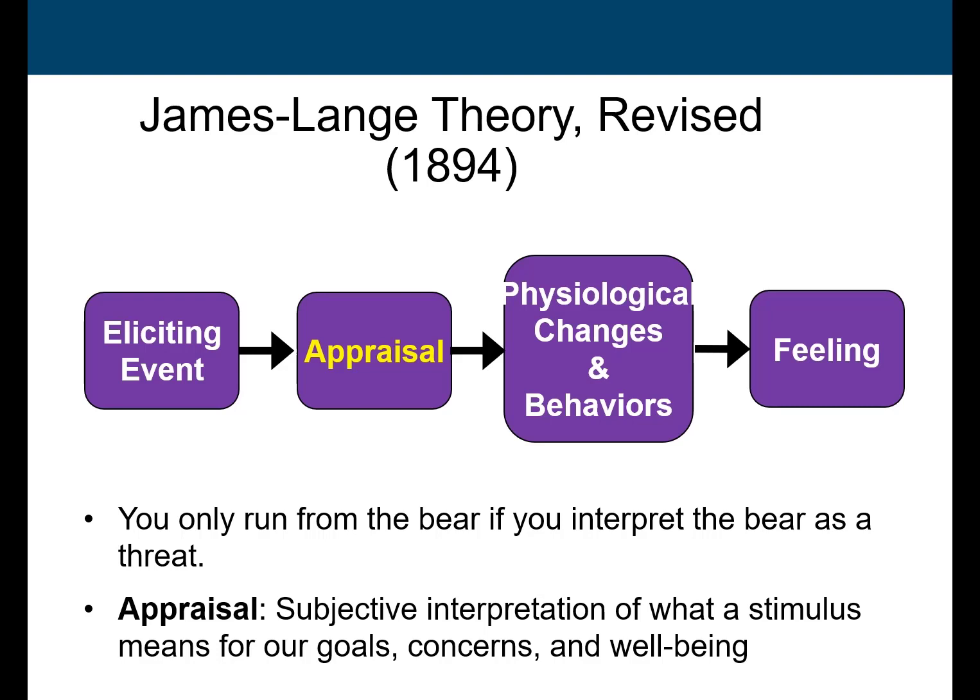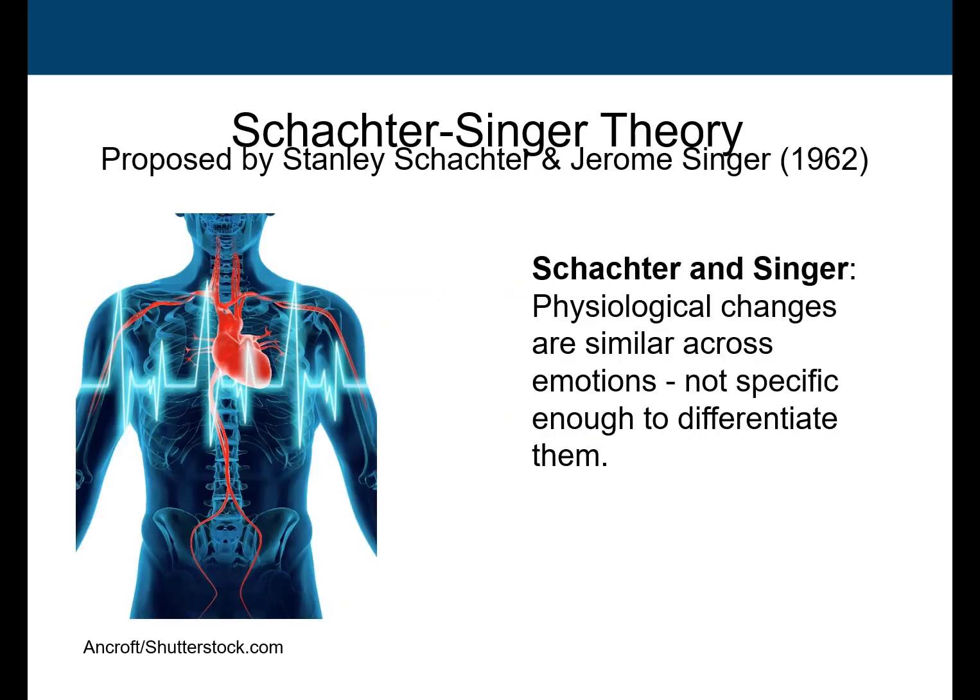The James-Lange theory was revised in 1894. The revised view says there's an eliciting event and then an appraisal you make. You see a bear and appraise whether it's going to eat you — that produces a different emotion, physiological change, and behavior than if the bear is safely in a cage. It's the subjective interpretation of the stimulus related to your goals, concerns, and well-being that is so important in determining the emotion.